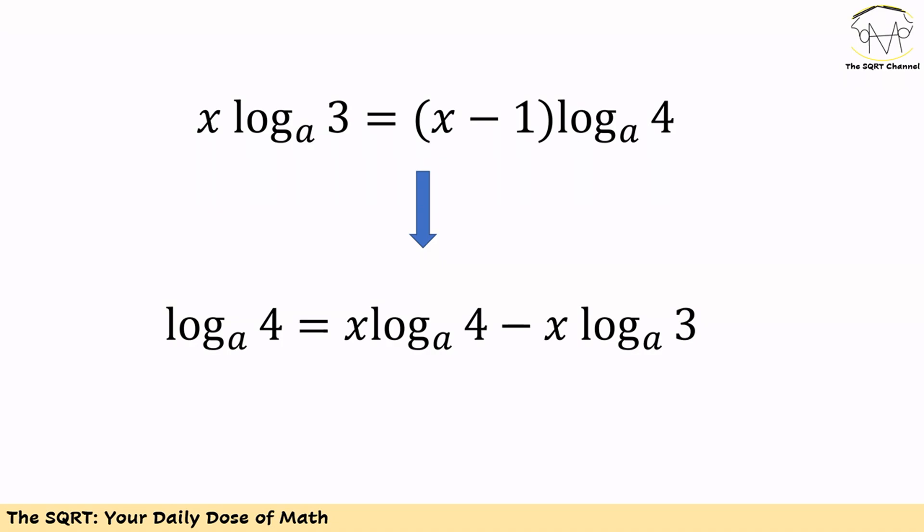Now we are going to simplify it a little bit further by moving all the terms that have x to the right hand side and the one that doesn't to the left hand side. Then we have log of 4 in base a is equal to x times log of 4 in base a minus x times log of 3 in base a.